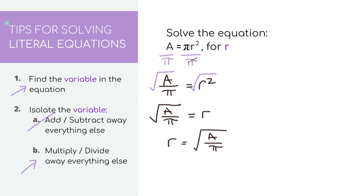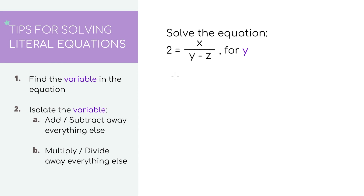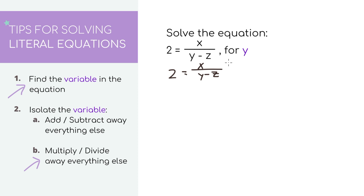I kind of like these because it makes me feel smart writing all these letters and symbols. This next one isn't any type of special equation — it's just a random literal equation. Let's find the variable: we're looking for y, which is here in the denominator. I'm going to skip adding and subtracting because there's nothing to add or subtract. In terms of multiplication and division, I want to get y out from the denominator, so we can multiply both sides by the entire denominator, which is y minus c.